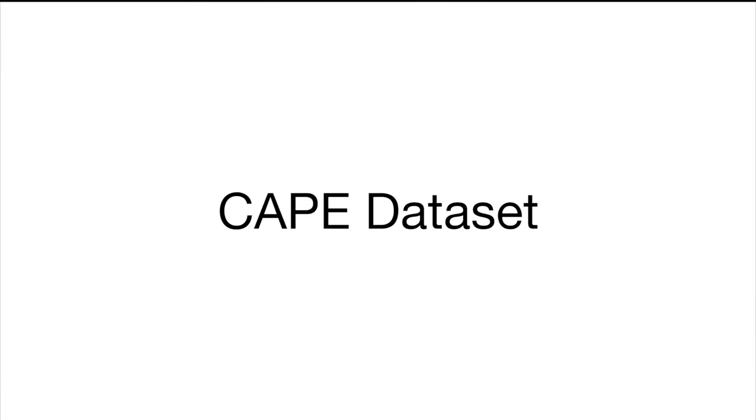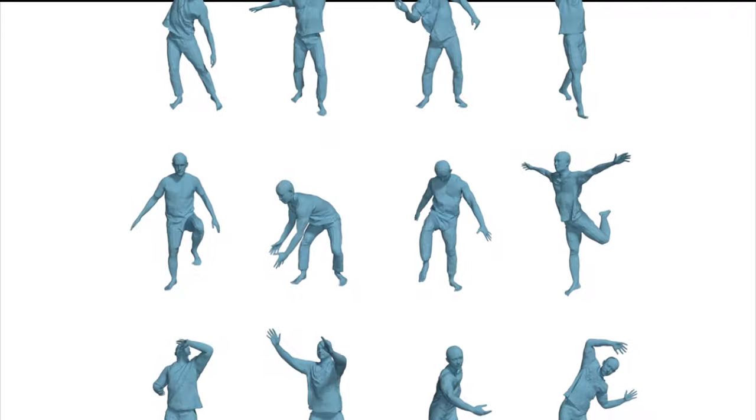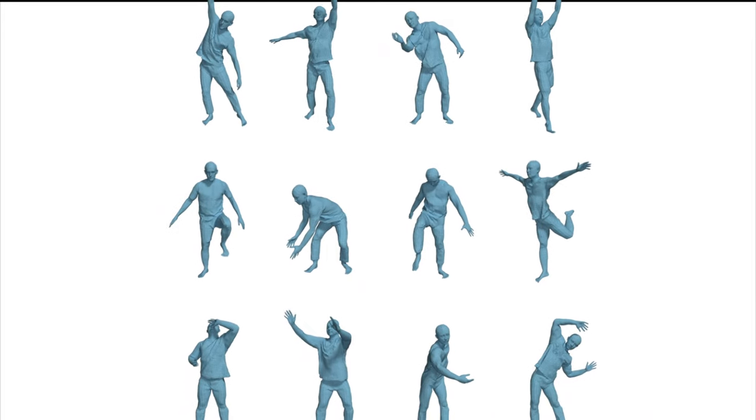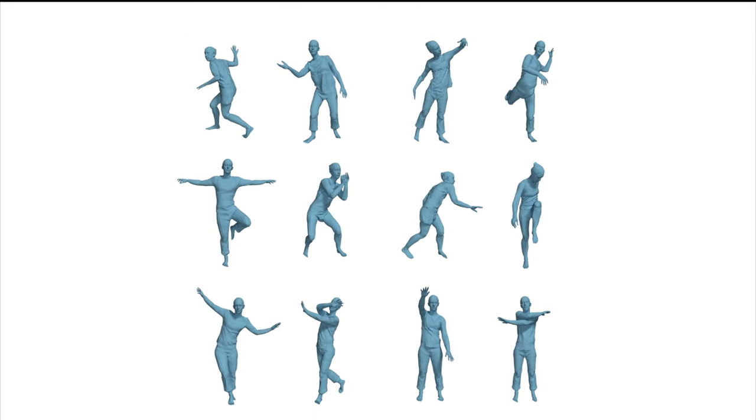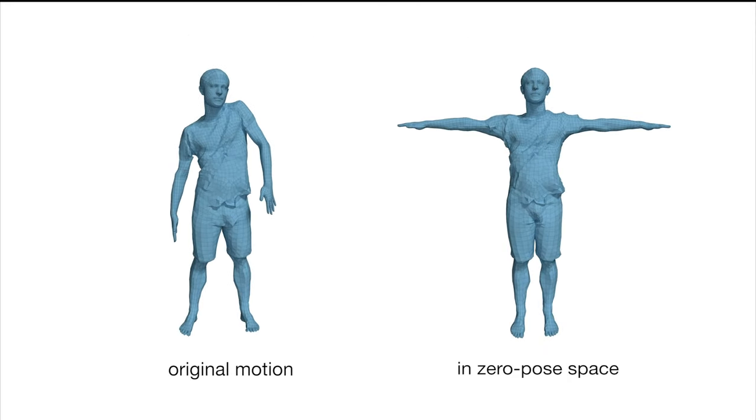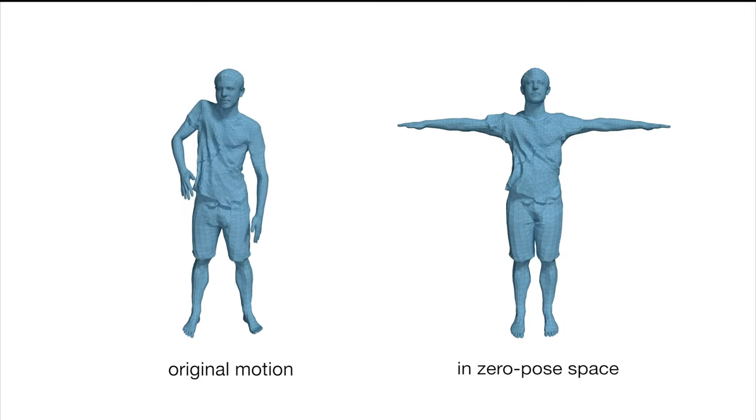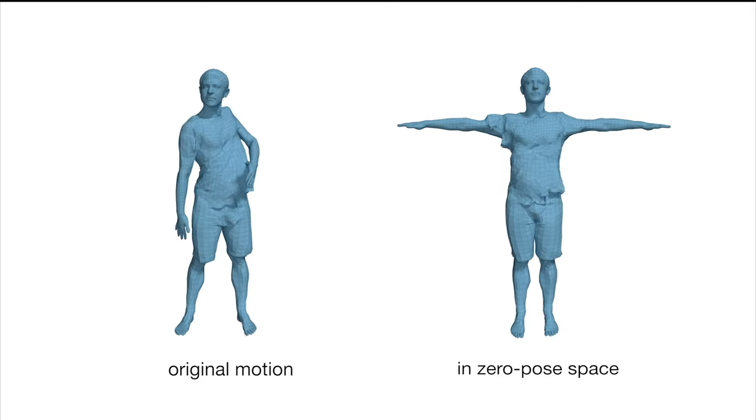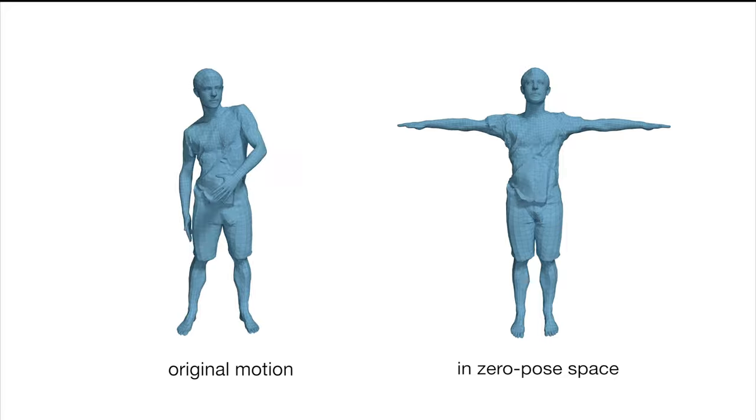To train the network, we contribute a diverse dataset of humans in various types of clothing, performing a large range of motion sequences. We register the scans to a consistent topology, and un-pose them to the zero-pose space to facilitate learning. This video clip shows how the captured clothing deforms in the zero-pose during a shoulder mill sequence. We have released the dataset for research purposes.